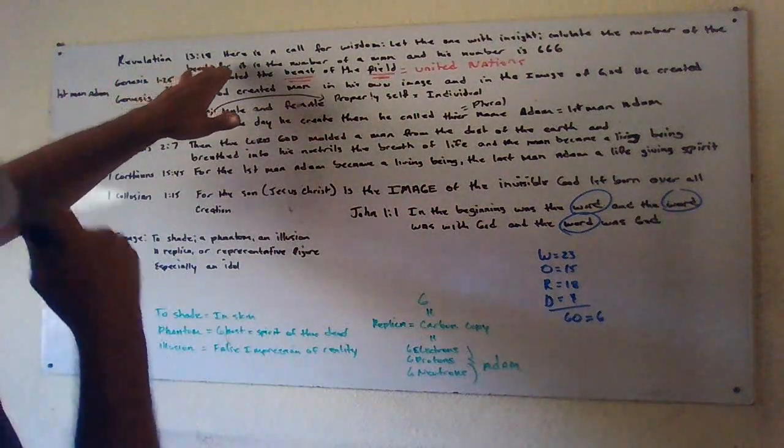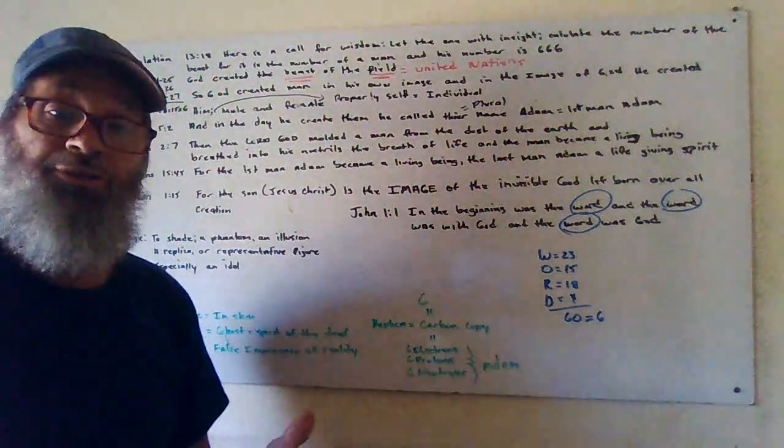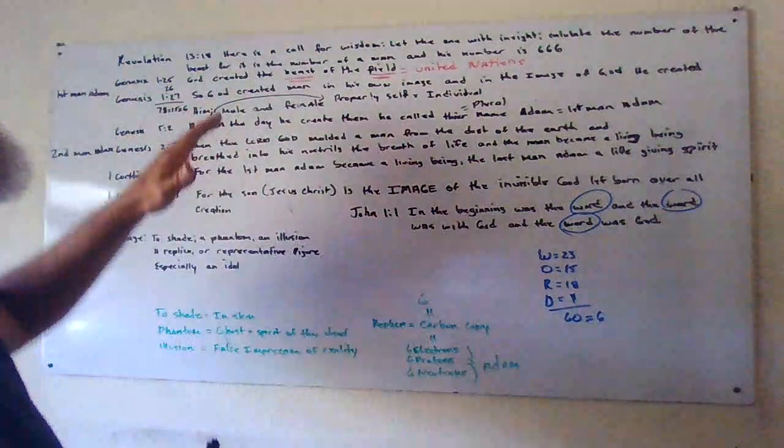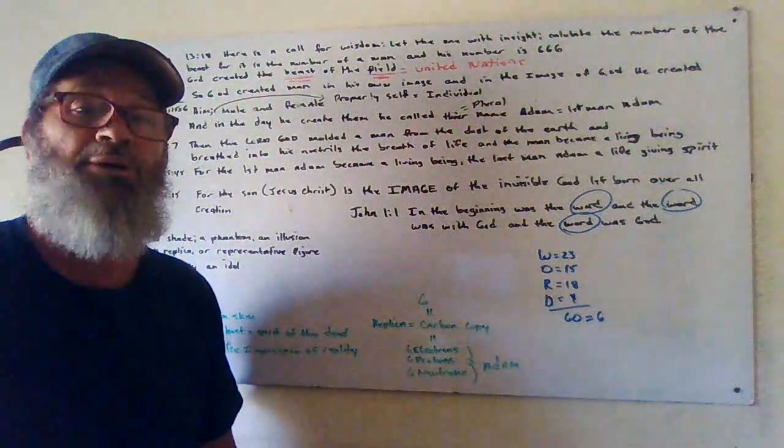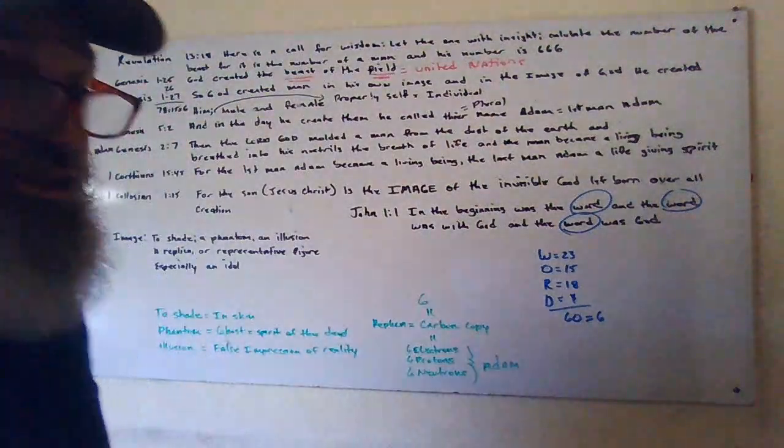Starting at Revelations 13:18, which is a riddle that's written inside the New Testament Bible. Here is a call for wisdom. Let the one with insight calculate the number of the beast, for it's the number of a man, and his number is 666.